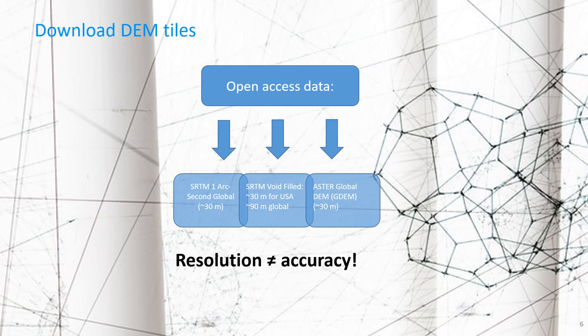But if you want to plan a dam in a river, you probably need very high spatial resolution. In both cases, you need a good accuracy. You can download the SRTM DEM from the USGS Earth Explorer website, or you can use a plugin in QGIS, the SRTM Downloader plugin.